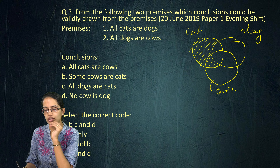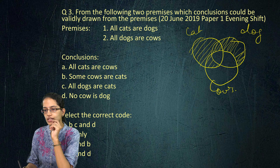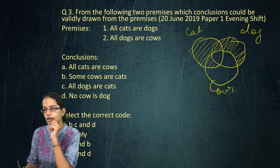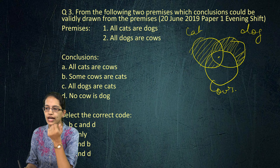So I will shade this region which is not shared. The second premise: all dogs are cows — that means any dog would be a cow, so there would be no dog present outside that region. Now based on this, what can I say? All cats are cows — so cat if any would be in this region. All cats are cows becomes the correct statement.